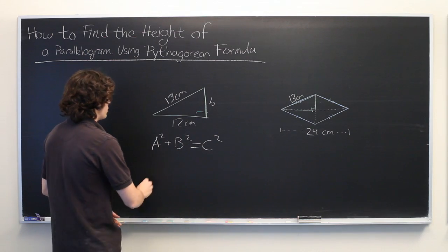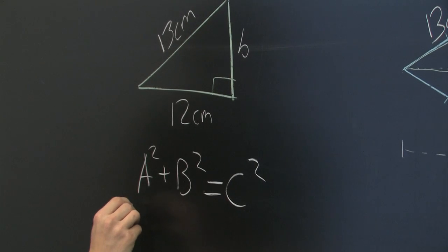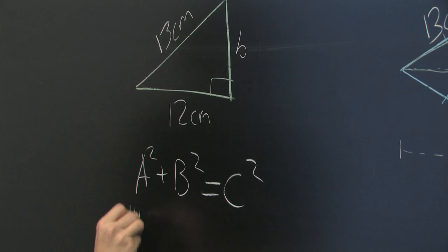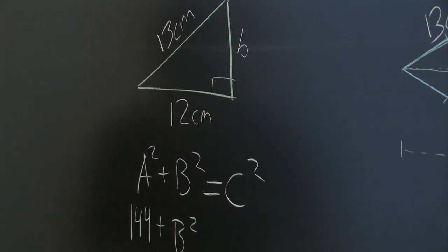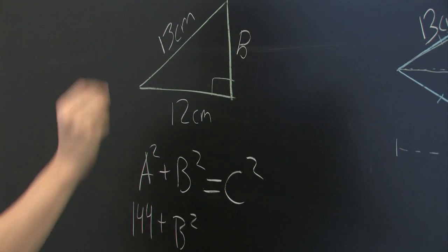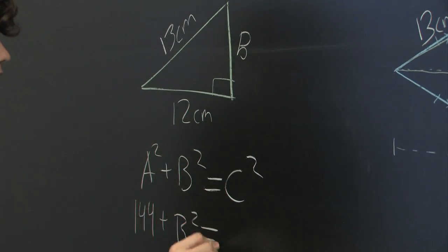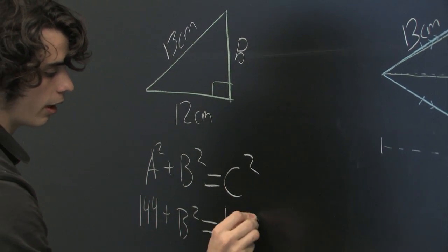We can simply plug in our values. We get 12 squared, which is 144, plus B squared, which we don't know yet. Make it consistent. Equals 13 squared, which is 169.